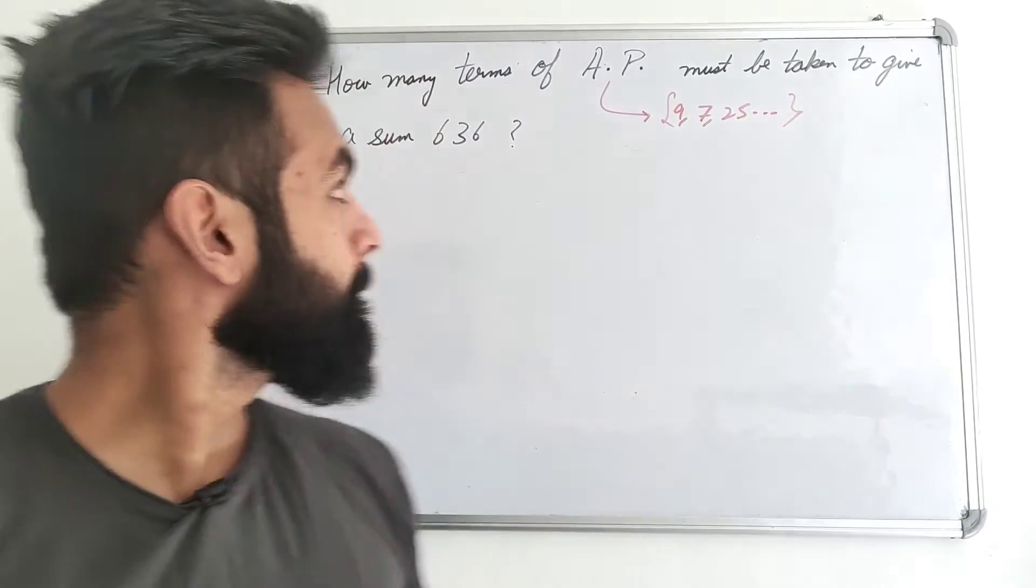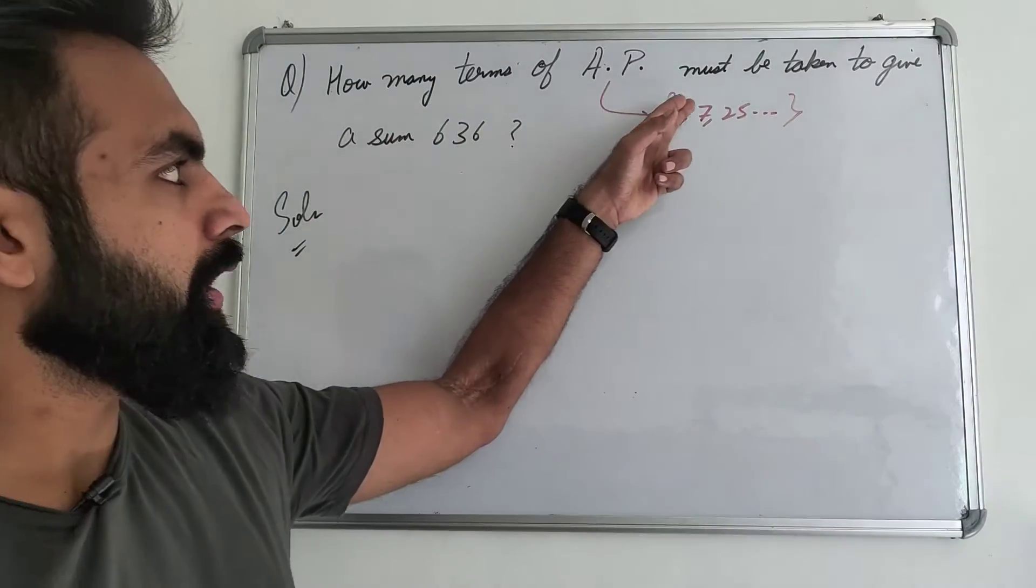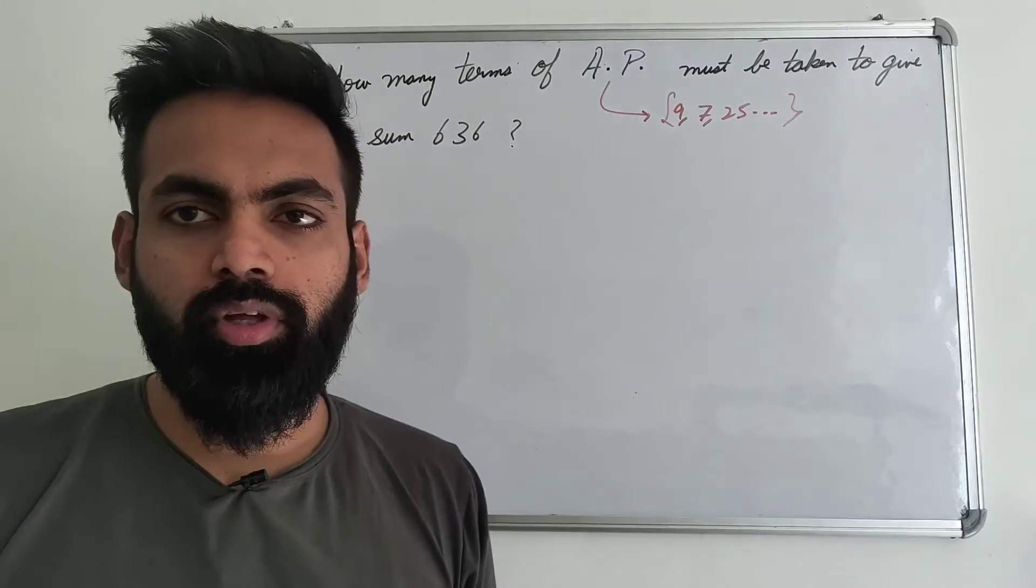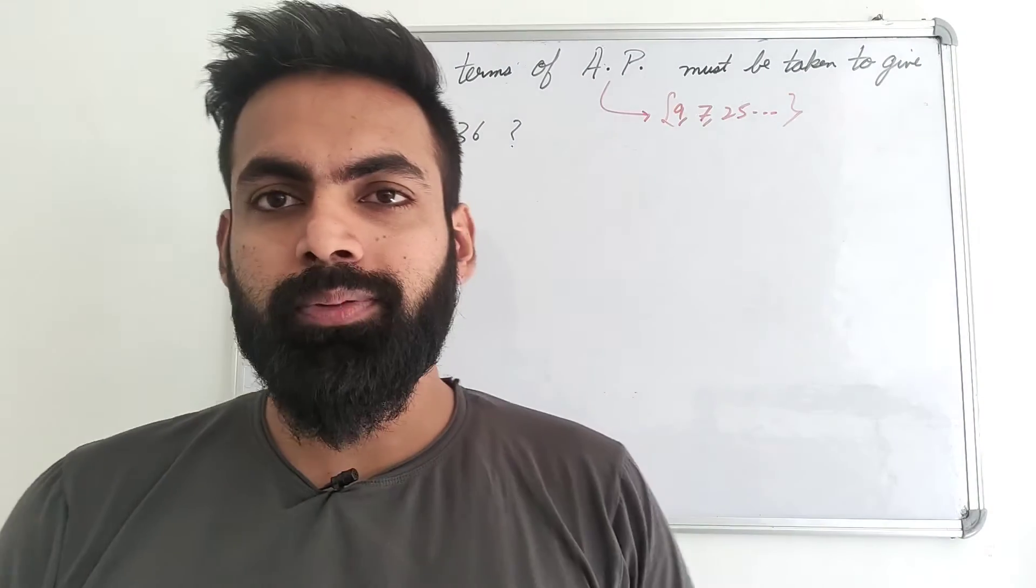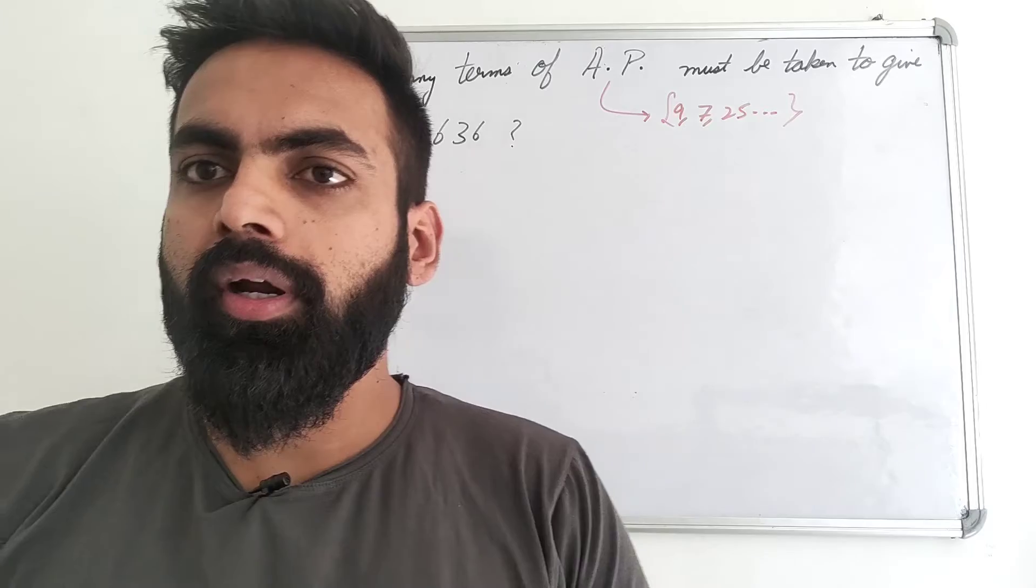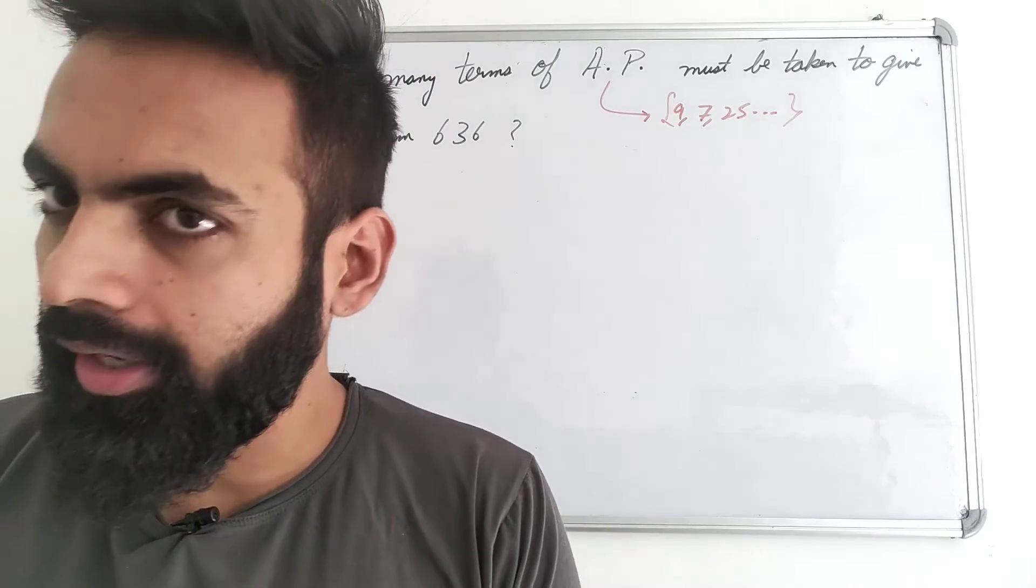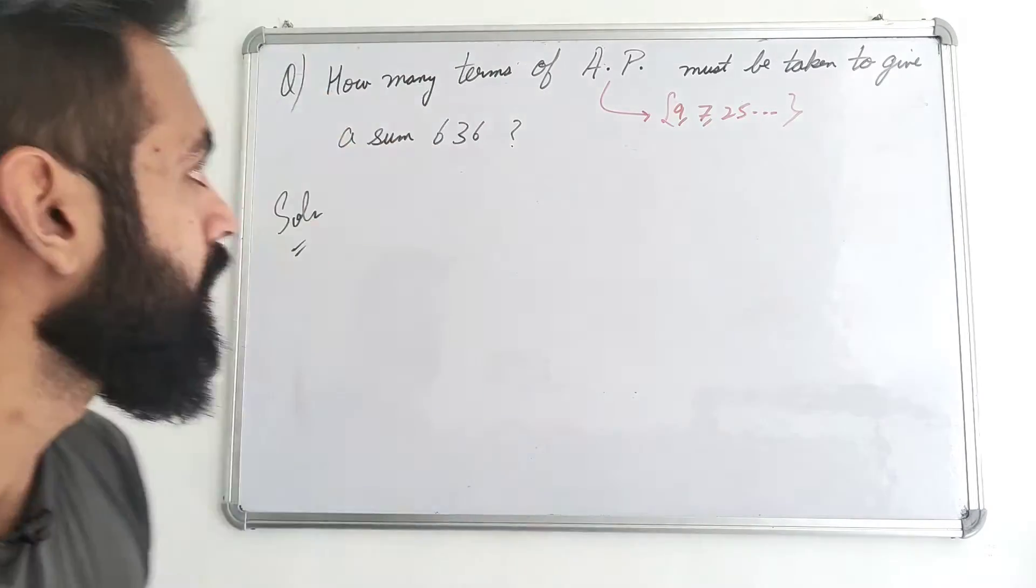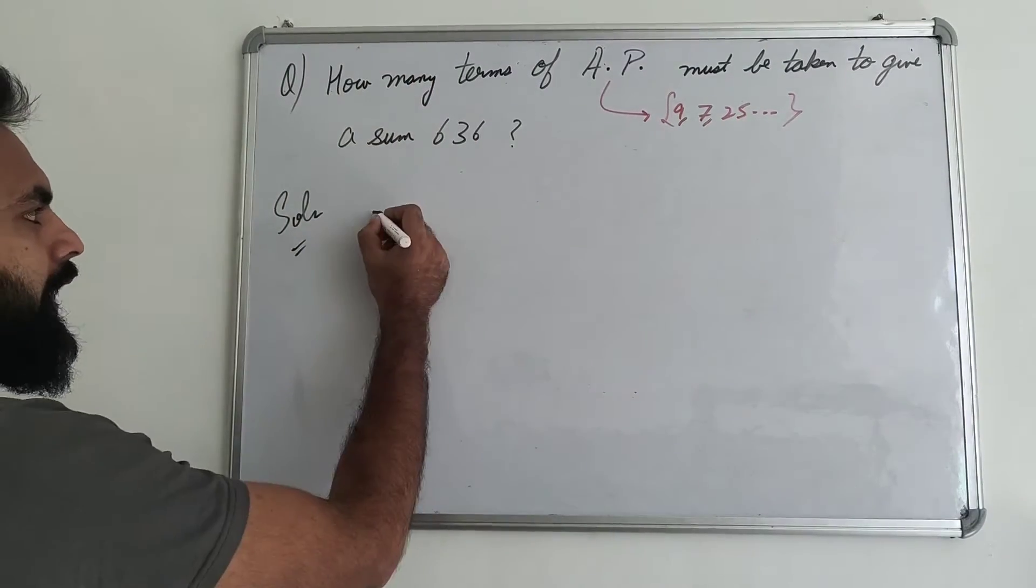First question is, how many terms of AP must be taken to give a sum of 636? Look, AP is given, you can ask how many terms. Now, let's start with facts, what is provided. How many terms have you asked? That means, N has been asked.